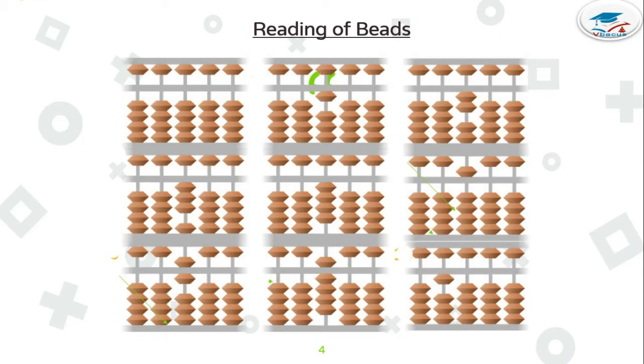Now reading our beads. You can see in the first figure no bead is touching, so value is 0. When it touches the value bar, then it gets value. In the second figure, one lower bead is touching, the value is 1. In third figure, two beads are touching the value bar, the value is 2.